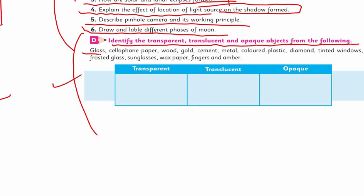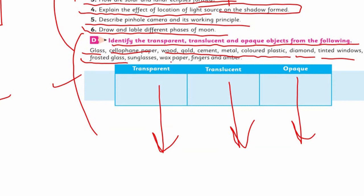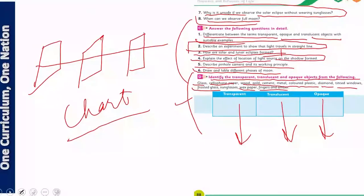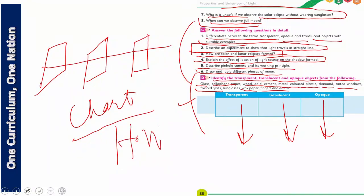Describe an experiment to show that light travels in straight line. Make a chart and present it in your class. Explain the effect of location of light source on shadow formation. Describe pinhole camera and its working principle. Draw and label different phases of moon - eight phases, starting from first one reaching to the last. Identify the transparent, translucent, and opaque objects from the following: glass, cellphone paper, wood, gold, cement, metal, colored plastic, diamond, tinted windows, frosted glass, sunglasses, wax paper, fingers, and amber. One more homework: go to the kitchen and discuss with your mother which items are transparent, translucent, and opaque. Best of luck my dear students, see you in the next chapter. Allah hafiz.